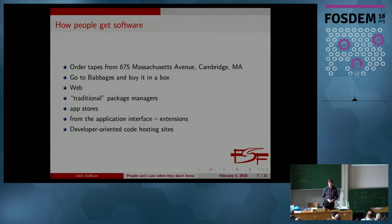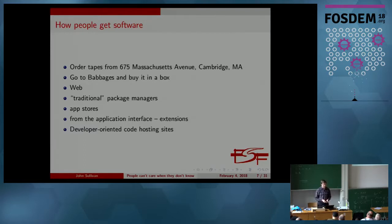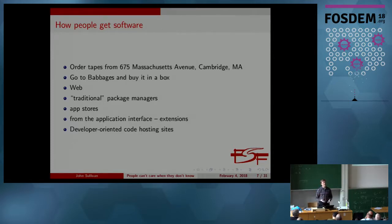There are also more developer-oriented code hosting sites like GitHub that people use for distributing software — sometimes already compiled, but it is a place where people get software they go on to use. Software also comes on devices that people buy — at Best Buy or ordering things online — devices that come with software loaded onto them. That's a separate problem we're tackling through our Respects Your Freedom hardware certification program, to help users know that a device they're buying actually contains only free software.